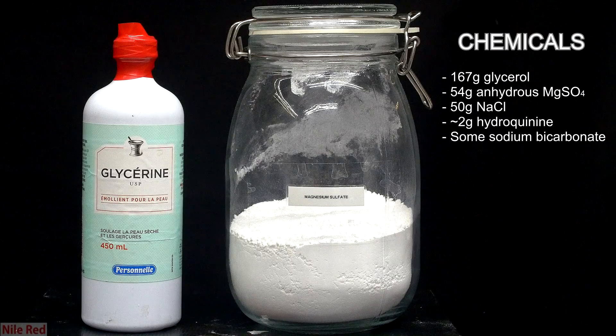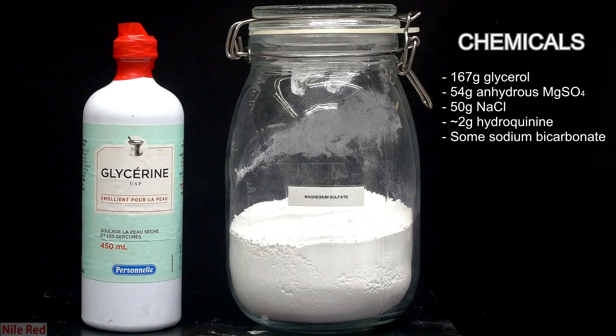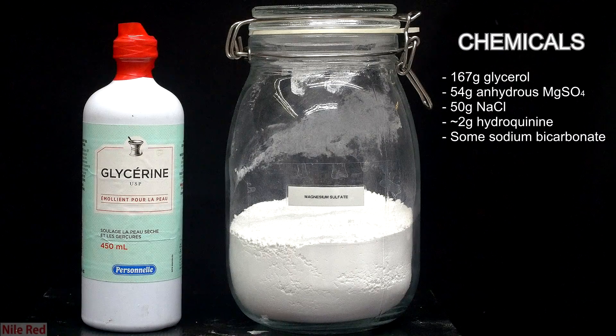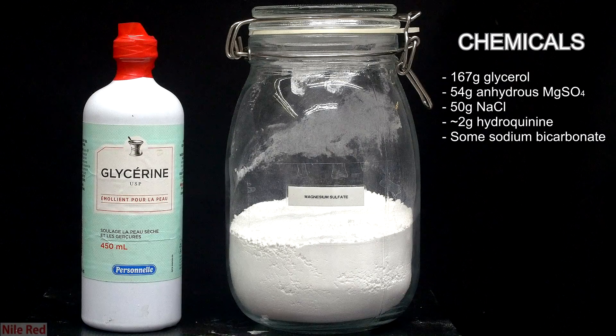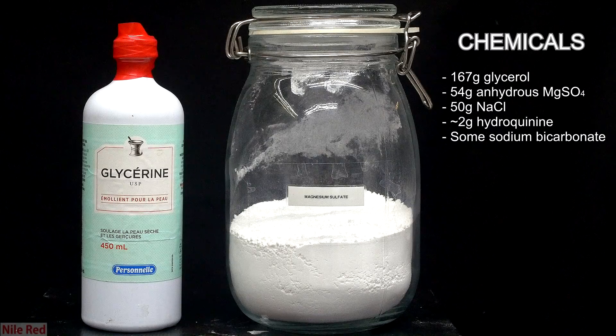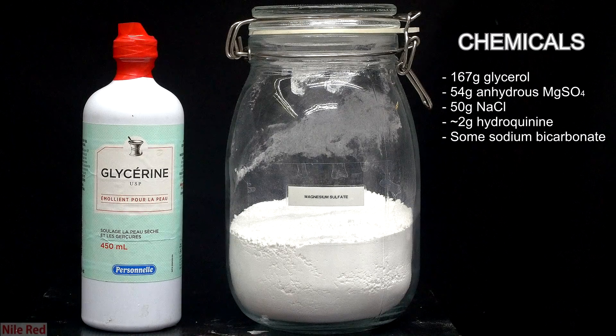So here's what we need to prepare the acrolein. On the left, we have our glycerol, and on the right, we have anhydrous magnesium sulfate. The magnesium sulfate in this reaction acts as a catalyst, and I'll explain later on what it's really doing.